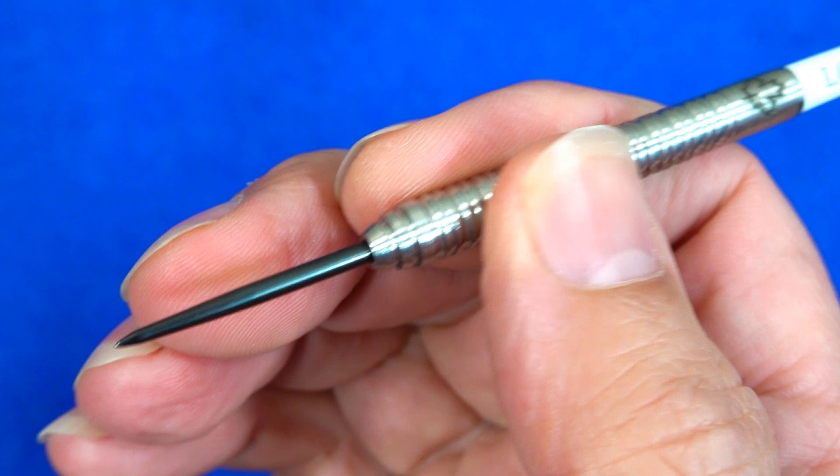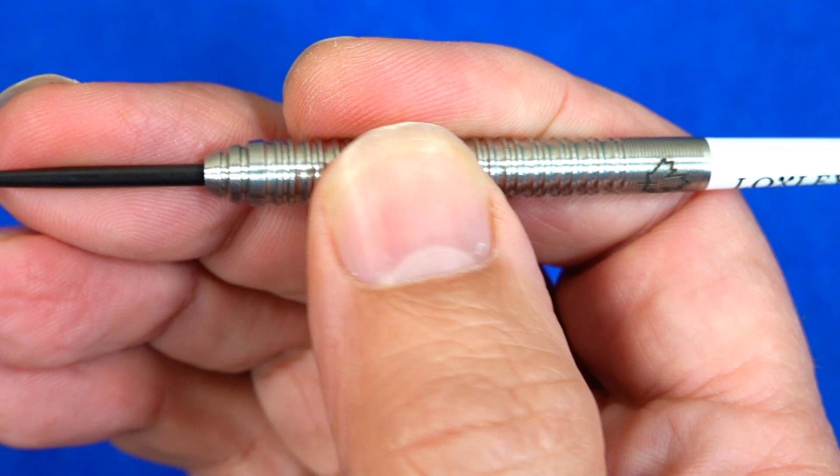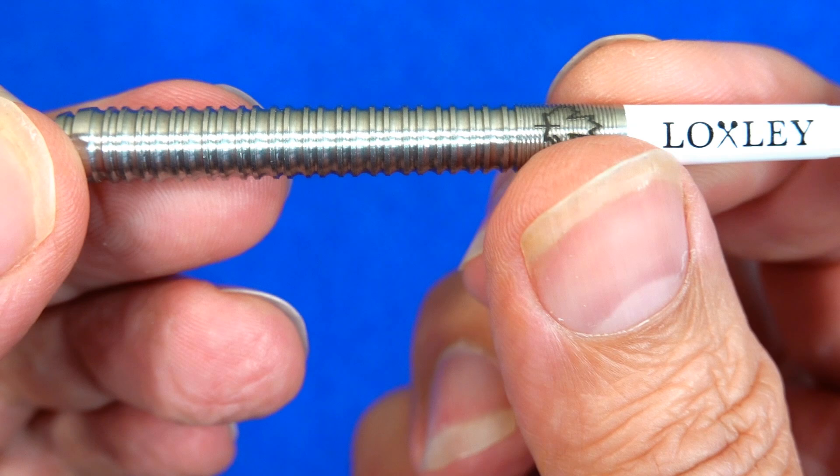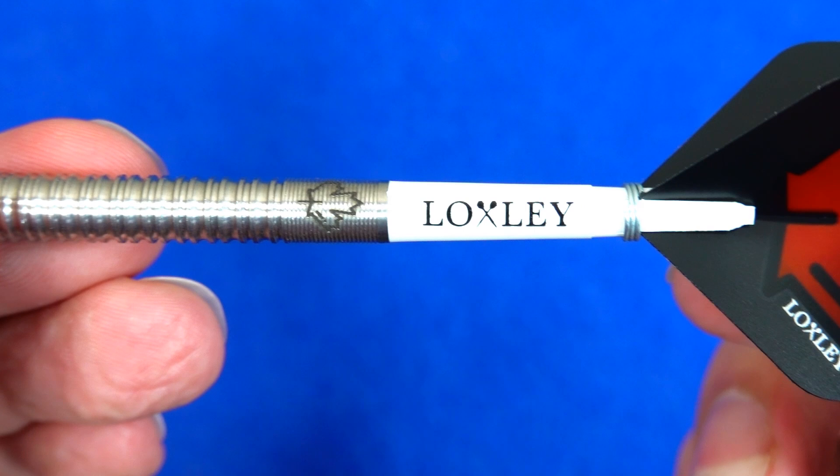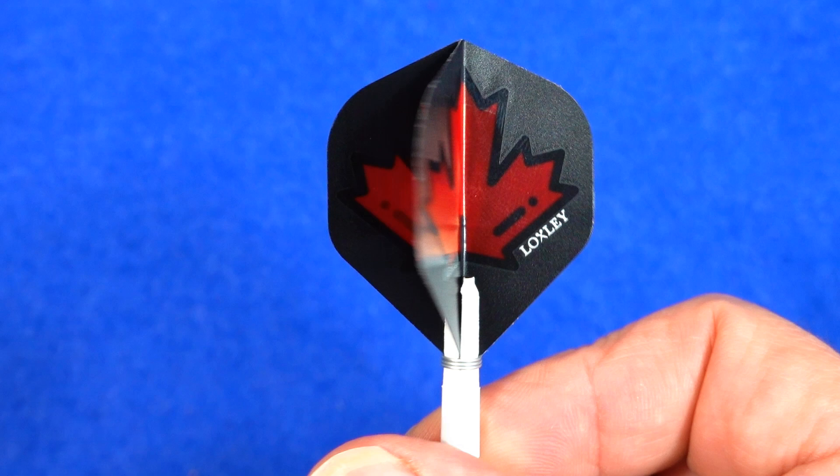And on the very end, you've got a micro grip. We'll have a close look at the grip in the super close up just now. And they're fitted with the Loxley short nylon stems. And like I said before, a nice set of flights. The John Part Maple Leaf and that red section is slightly see-through.